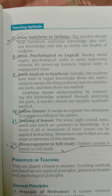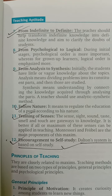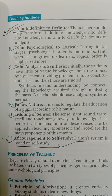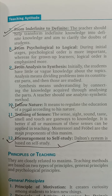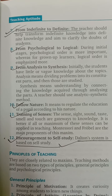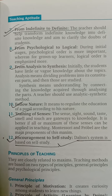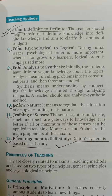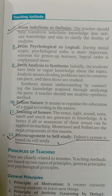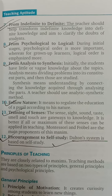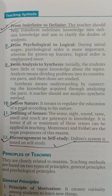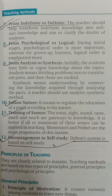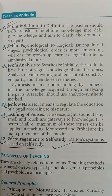From indefinite to definite. From psychological to logical — during initial stages, psychological order is more important, whereas for grown-up learners, logical order is emphasized more.